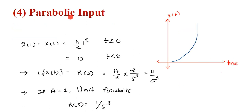Now we discuss the parabolic input. It represents the rate of change of velocity, that is acceleration, and acceleration is a function of the parabolic signal. Its graph is parabolic in shape. It is denoted by x(t) and is given by r(t) equal to x(t) equal to (a/2)·t squared when t is greater than or equal to 0, where a is the slope. At t less than 0 its value is 0.